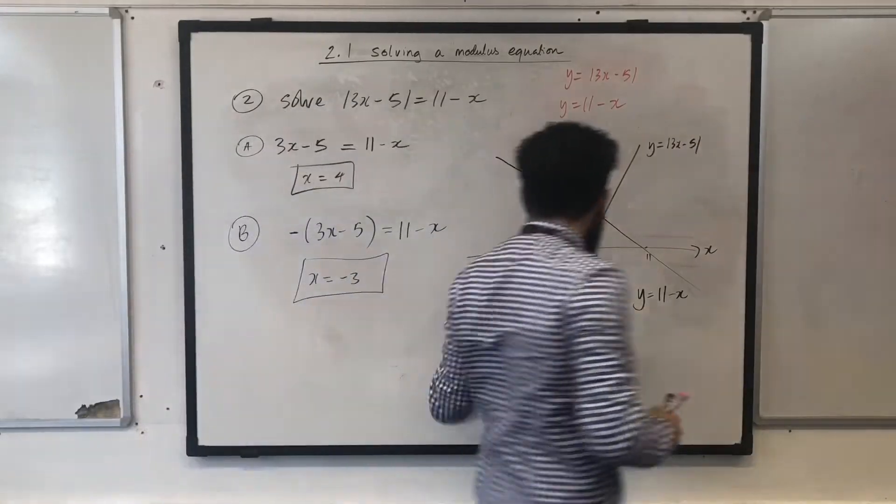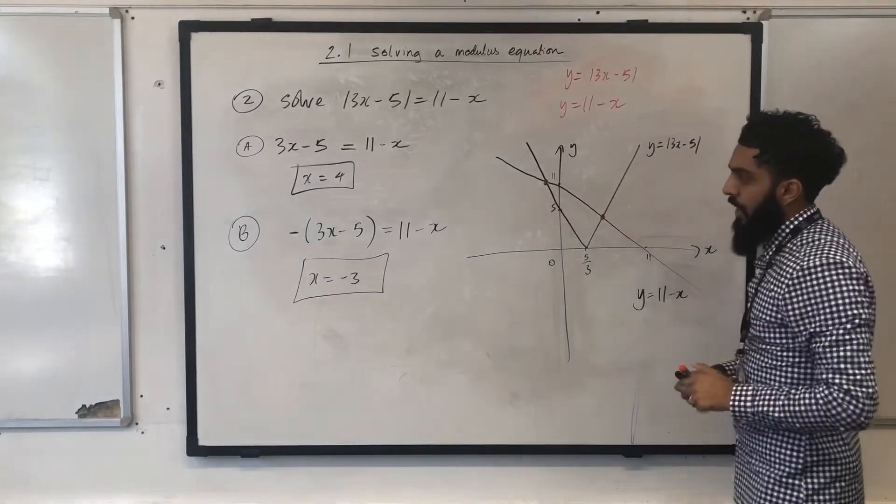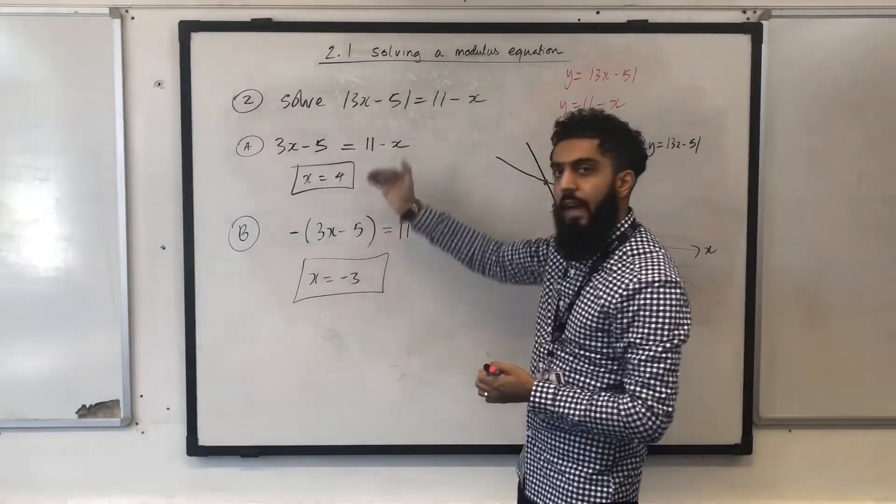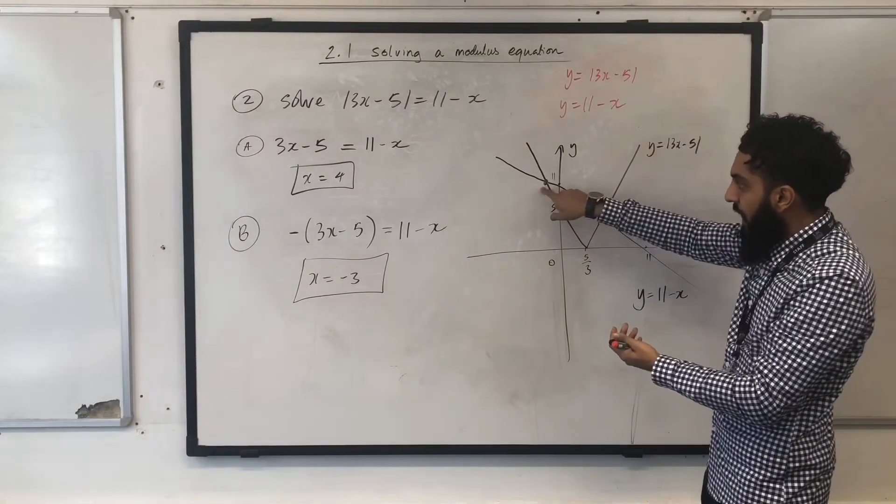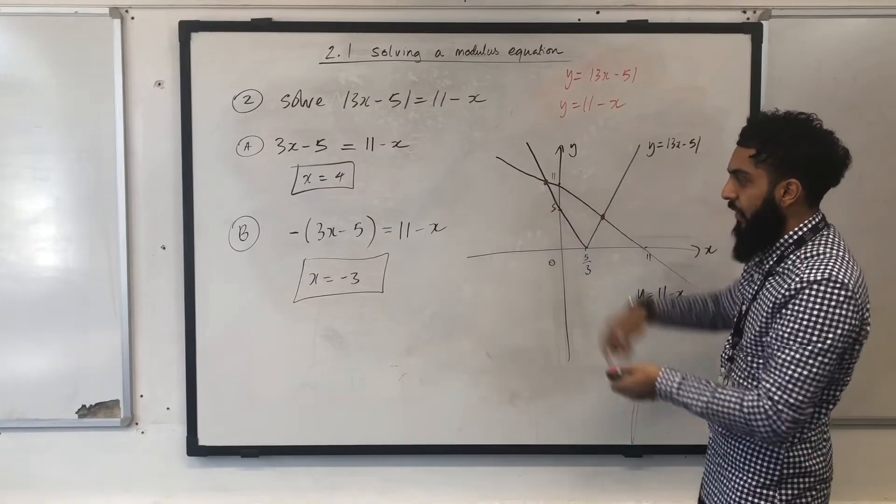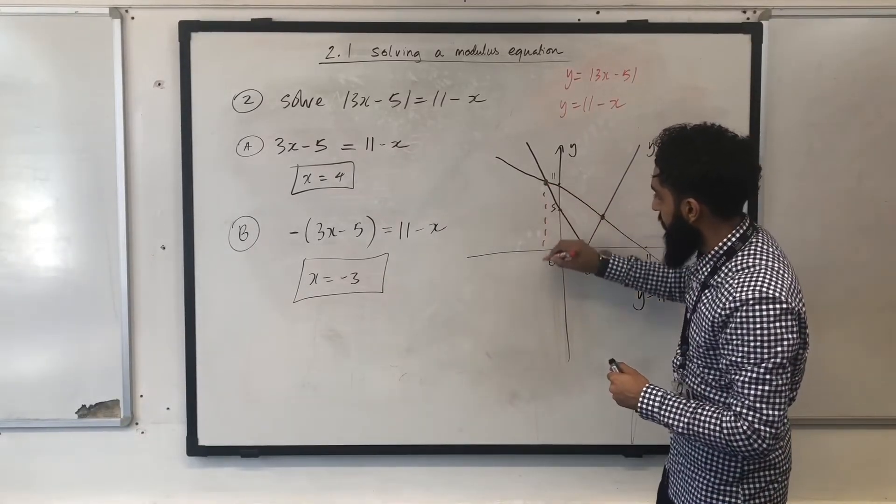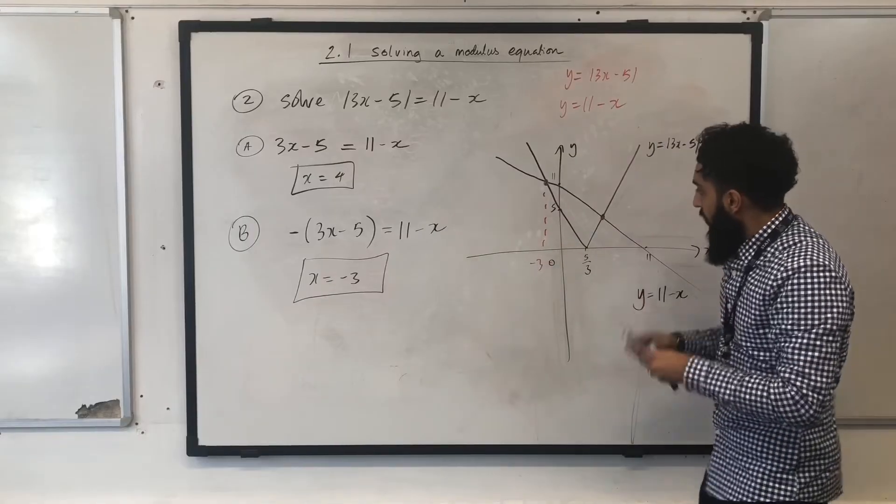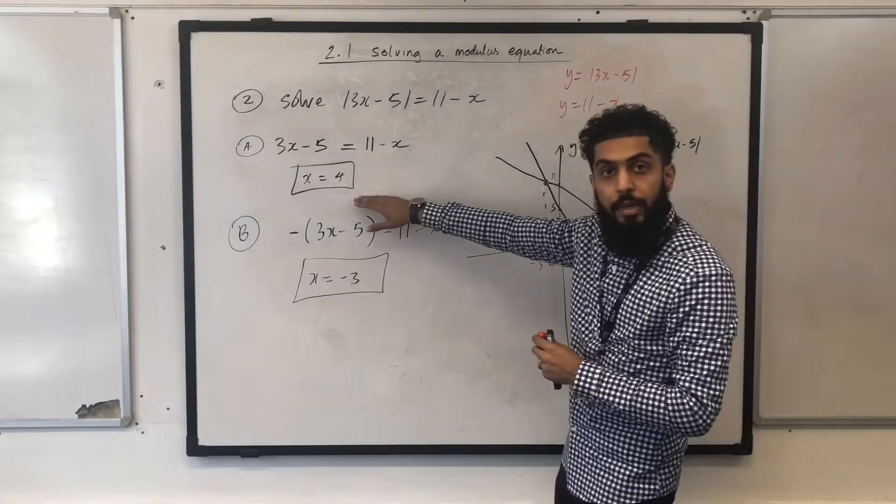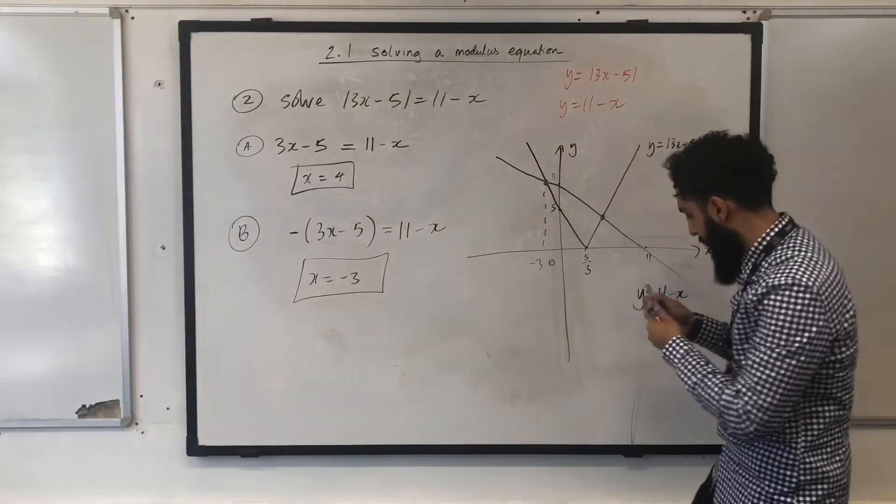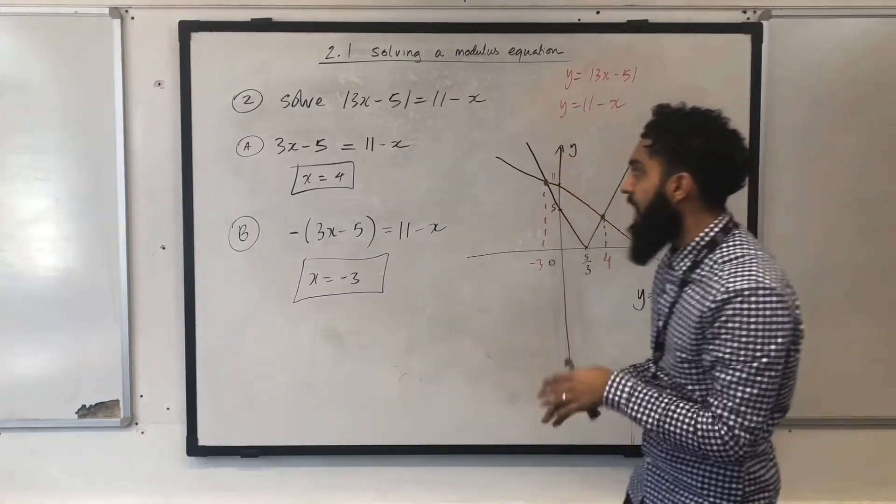Right, guys. What we can see over here is two points of intersection, so these two solutions are valid, because there are two points of intersection. Now, this point over here has a negative x value, so in this case it will be minus 3. This point over here has a positive x value, so in this case it will be 4. And that completes the question.